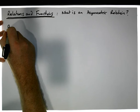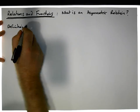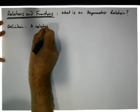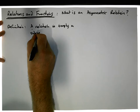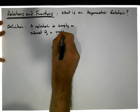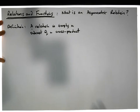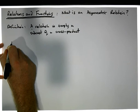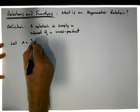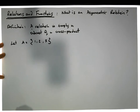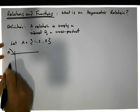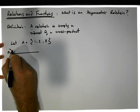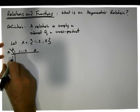First, let's define a relation. A relation is simply a subset of a cross product — that's all a relation is. It's a set of ordered pairs from a cross product. As an example, let A be the set containing 1, 2, and 5, and let's calculate A cross A. We'll construct a table with A listed down the side as the domain — 1, 2, 5 — and A listed across the top — 1, 2, 5.